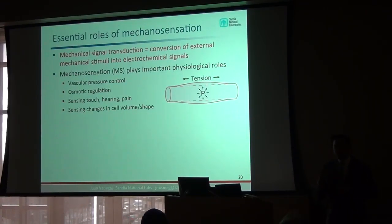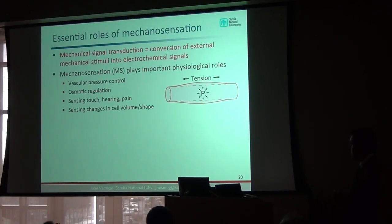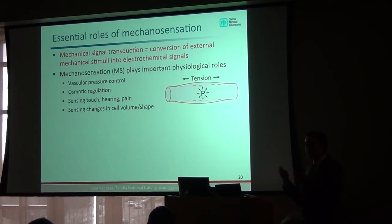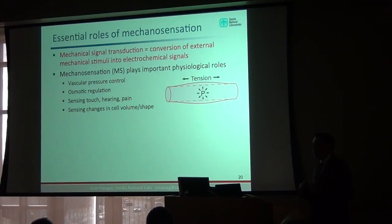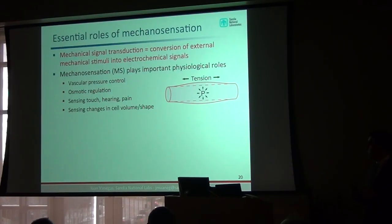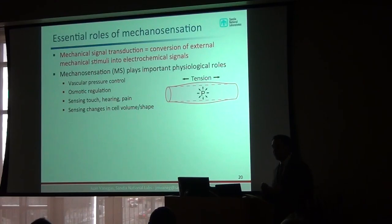Mechanotransduction plays many important physiological roles — the conversion of external mechanical stimuli into chemical signals. Think of a blood vessel: if pressure changes, that needs to be communicated to the heart for heart rate adjustment, which is important for vascular pressure control. Also, in osmotic regulation, if a cell swells it needs to regulate that. Even basic sensing of touch and pain involves mechanical stimuli. Recently, it has also been understood that sensing changes in cell volume and shape is very important for development.